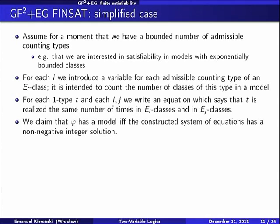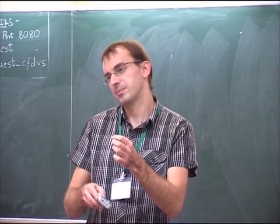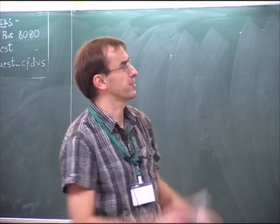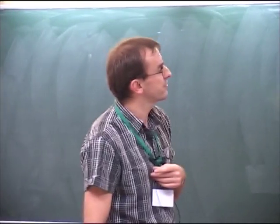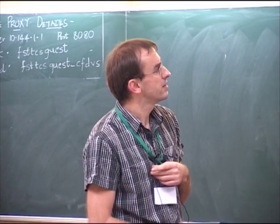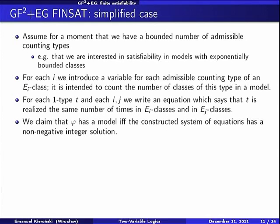What our equations say is an obvious thing that must be satisfied in every model: for each one-type T and each pair of equivalence relations E_i, E_j, this type is realized exactly the same number of times in E_i classes as in E_j classes. This is obvious because every element is a member of an E_i class and also a member of an E_j class. We claim that this is an if-and-only-if condition: phi has a model if and only if the constructed system of equations has a non-negative integer solution.